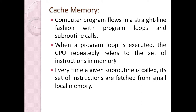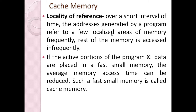Computer programs flow in straight lines, and sometimes there are loops and subroutines. When these are executed, they all refer to a small or local portion of memory — a small part of the program. This is called locality of reference. Due to locality of reference, we can keep the small active portion of the program in a small and faster memory, which is the cache memory.